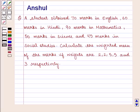Hello and welcome to the session. In this session we are going to discuss the following question which says that a student obtained 70 marks in English, 60 marks in Hindi, 90 marks in Mathematics, 50 marks in Science and 45 marks in Social Studies. Calculate the weighted mean of the marks if weights are 2, 2, 5, 5 and 3 respectively.